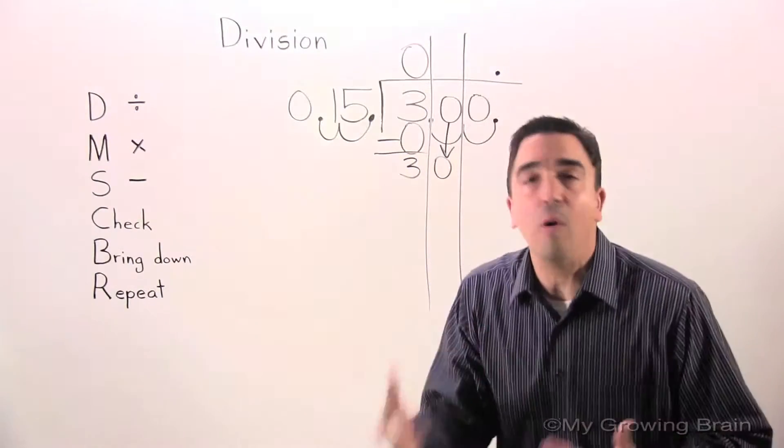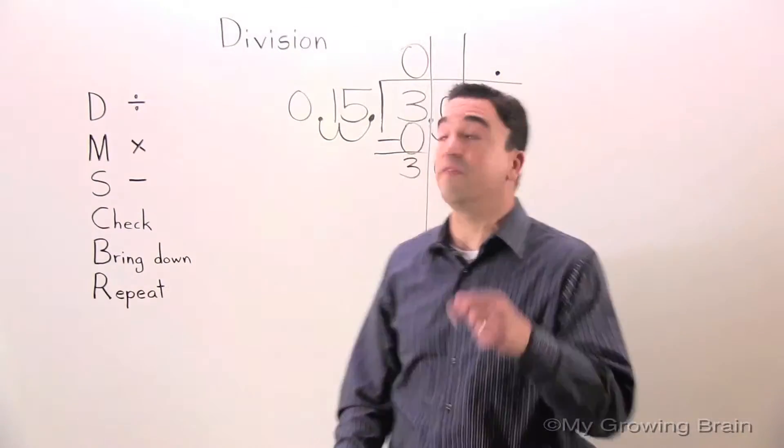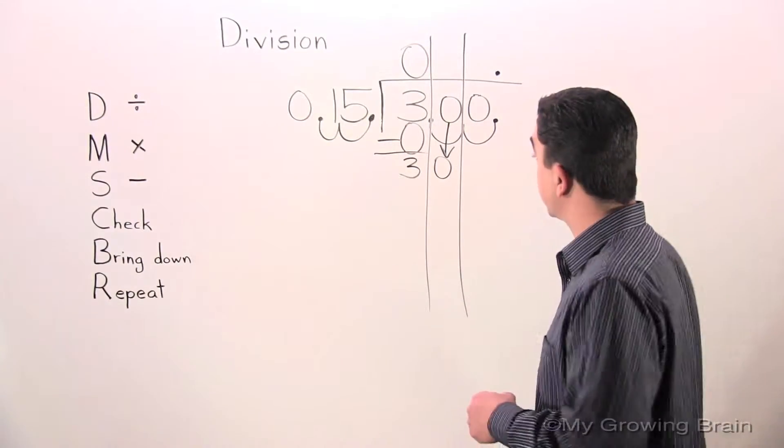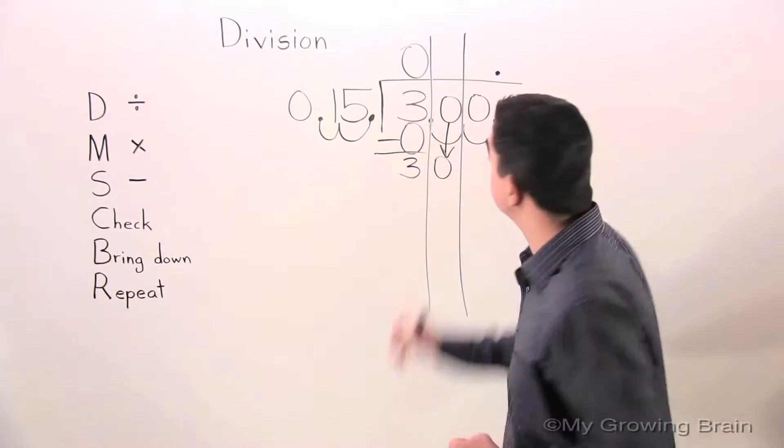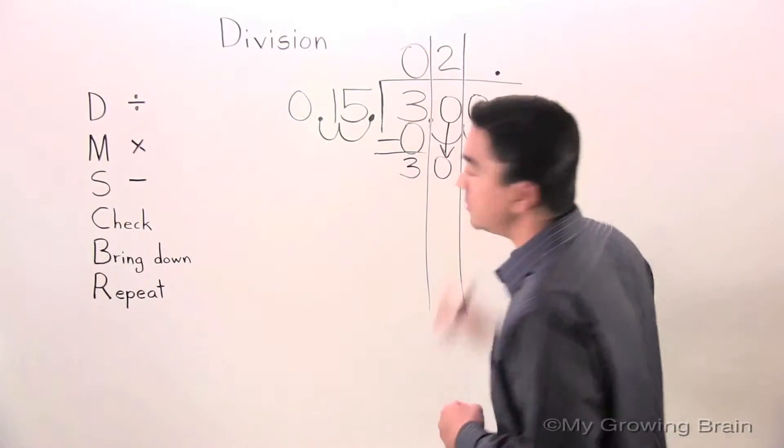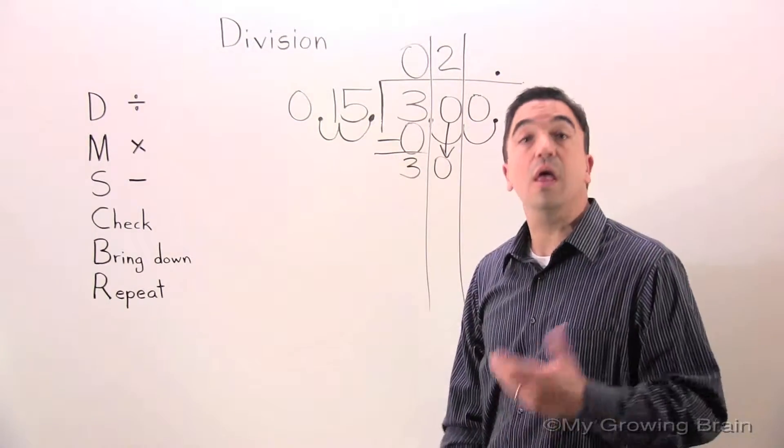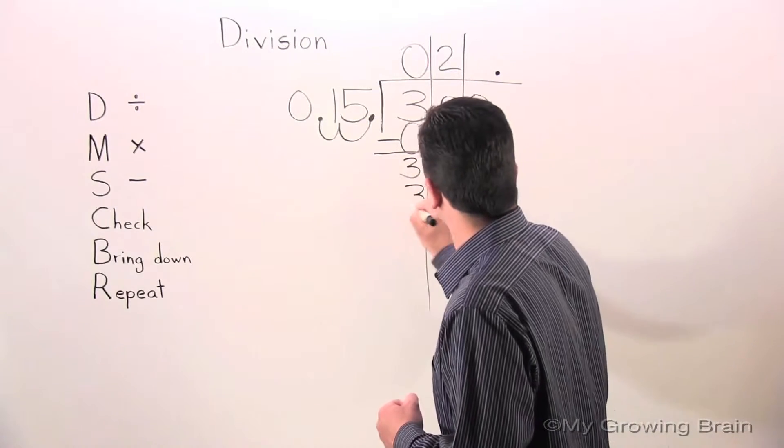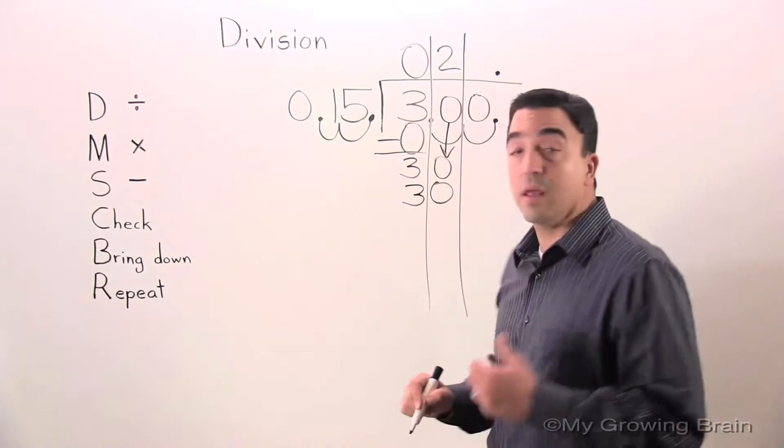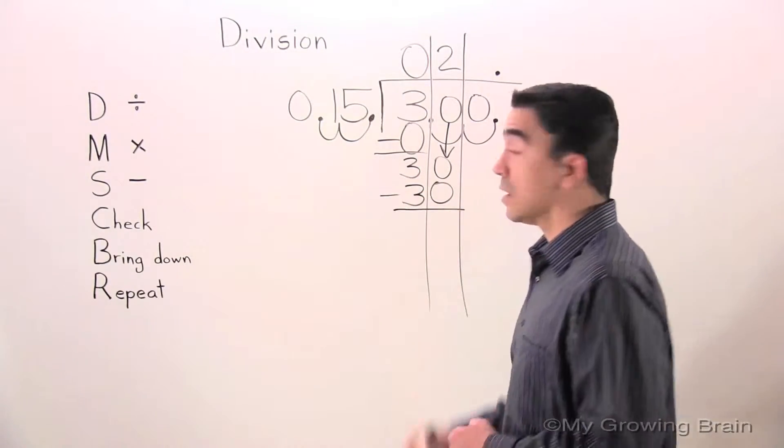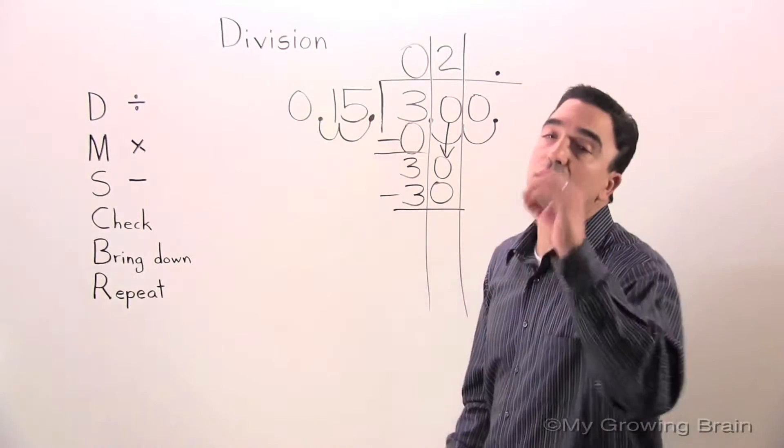Next step: Repeat. Repeat the whole process. Go back to the top. Divide. 30 divided by 15 is 2. Next step: Multiply. 15 times 2 is 30. Next step: Subtract. 30 minus 30 is 0.